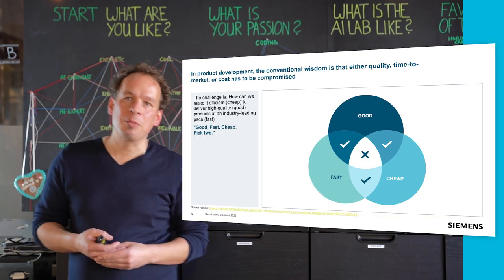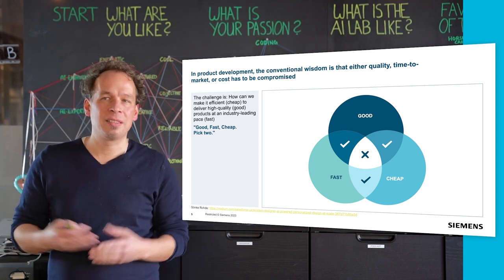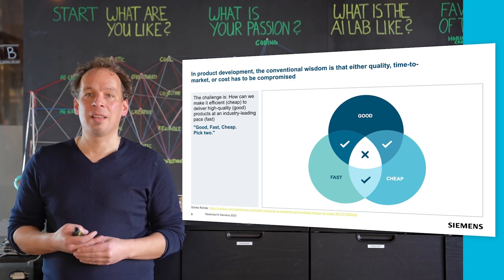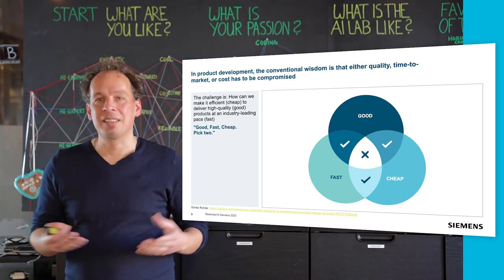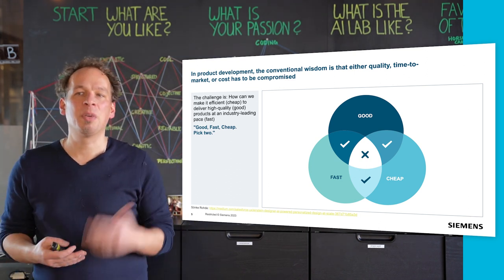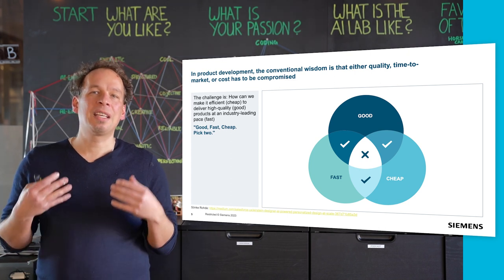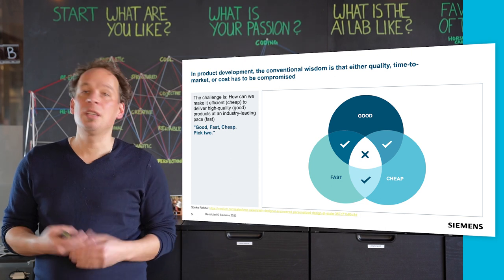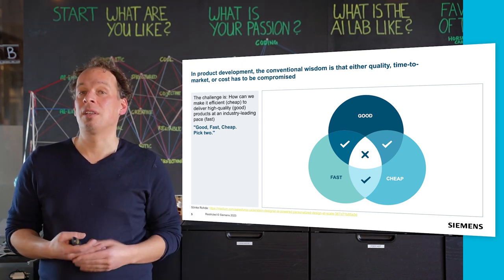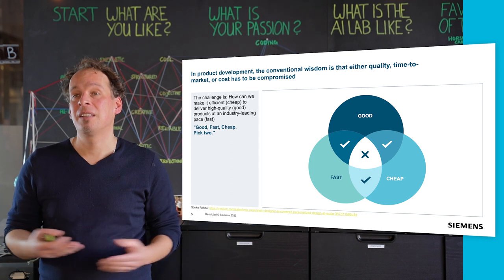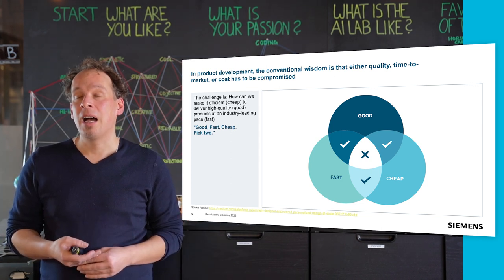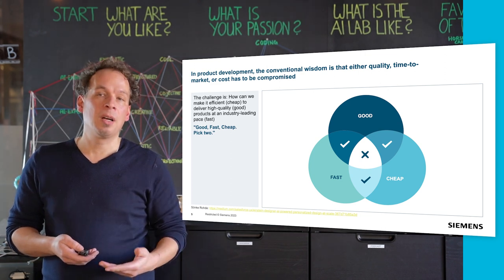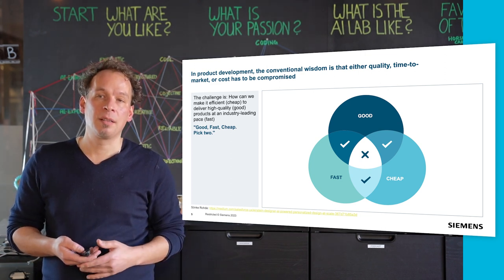In product development there is the conventional wisdom that quality, time to market, or cost have to be compromised — others say 'good, fast, cheap: pick two.' The challenge is how can we make it very efficient and cheap, deliver high quality, at an industry-leading pace. That's an important consideration when you're building prototypes along the line of your AI products.